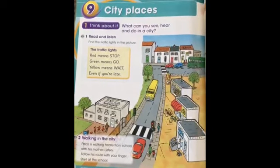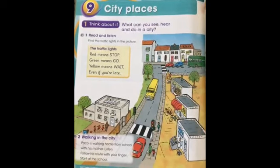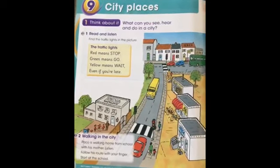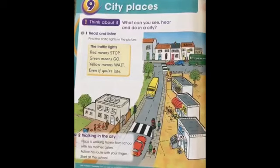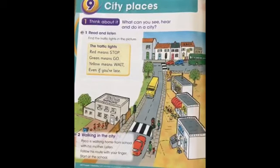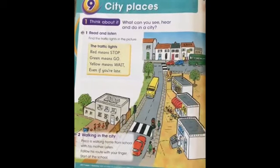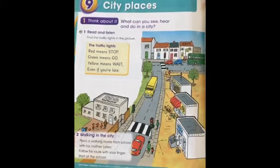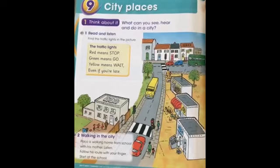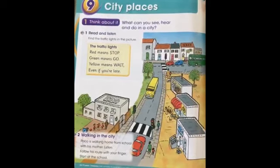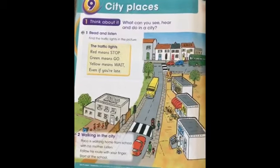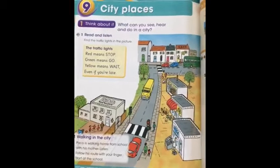Now, look at the traffic lights here in this picture. Here, the traffic lights have three colors. The red means stop. The green means go. And the yellow means wait. Here, we have, my students, a poem about the traffic lights. Let us listen to this poem.